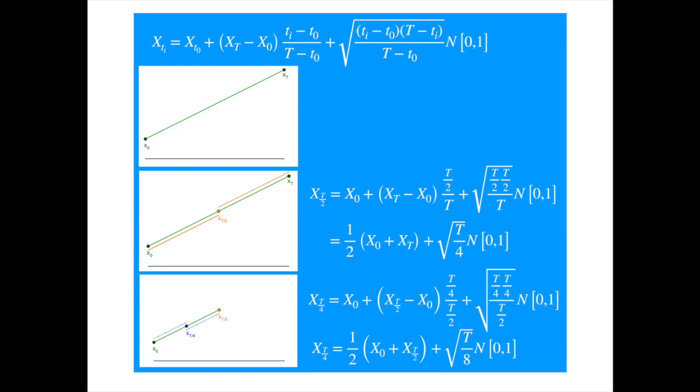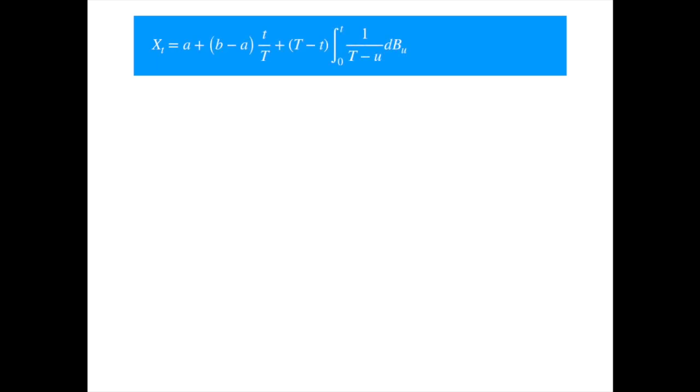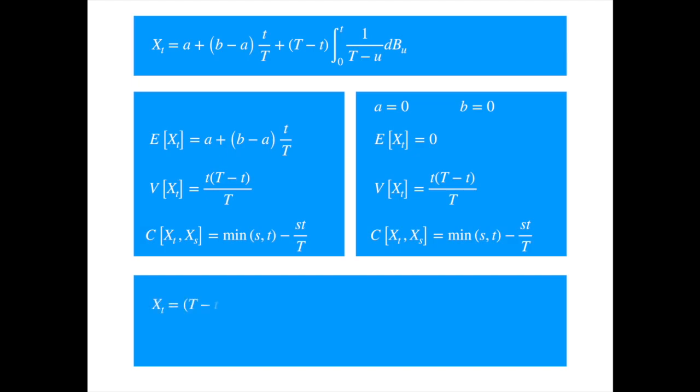We have covered the key concepts needed to understand and apply the Brownian bridge, but it is a useful exercise to explore its alternative forms. We first give the specification of the standard Brownian bridge, which is easy since we have already explained the process in its most general form. We reproduce the general solution and its mean, variance, and covariance. The standard Brownian bridge is pinned at zero at both ends, so we just replace A and B with zero. This makes the mean zero, but the variance and covariance remain the same. We dropped the variance from the list as it can be easily obtained from the covariance by replacing s with t.